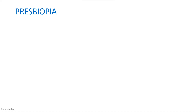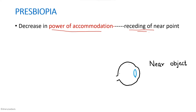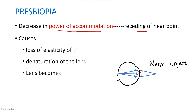Next is presbyopia. Presbyopia is a decrease in the power of accommodation — meaning the near point is receding, moving farther away. In a normal eye, near objects can be brought into focus by accommodation. But in presbyopia, this power of accommodation is lost. The causes are loss of elasticity of the lens or denaturation of lens protein, making the lens very hard and unable to converge rays properly.